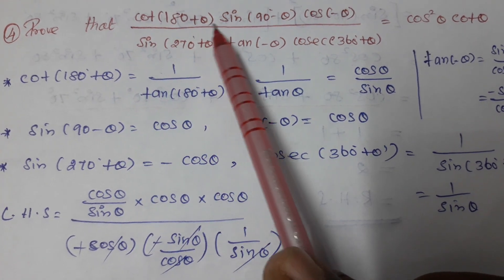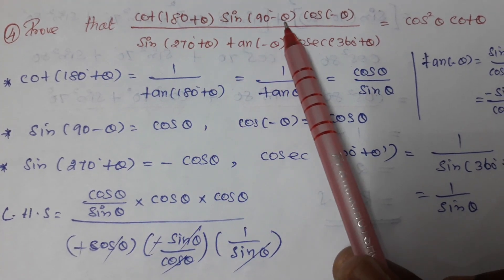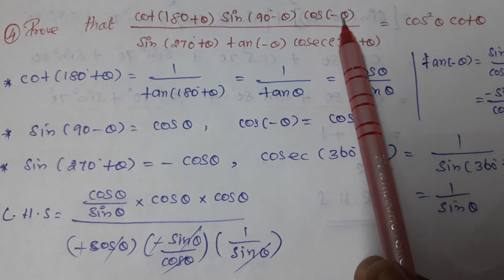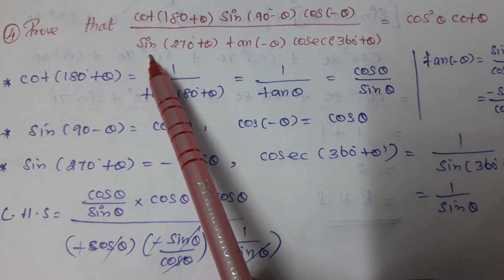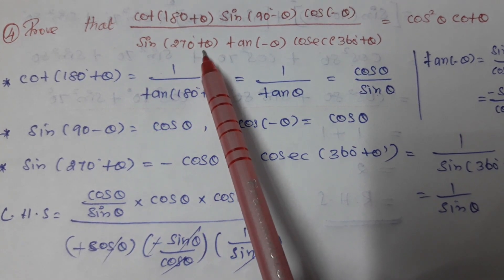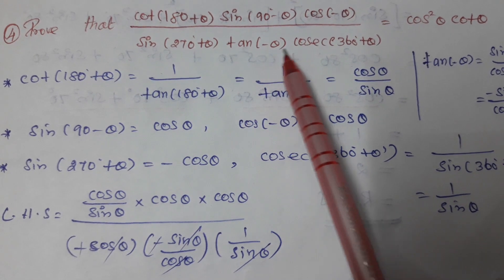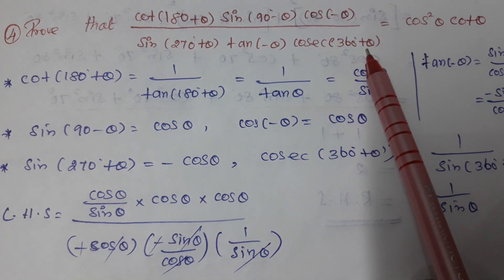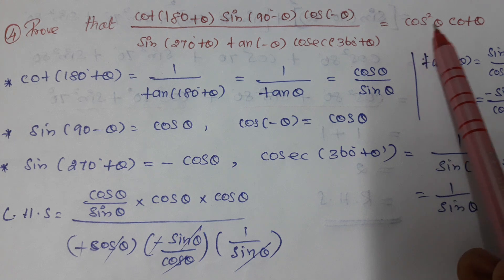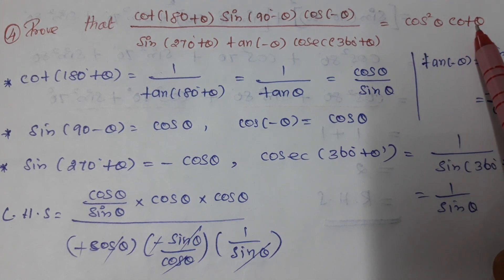The fourth question is: cot(180+θ) into sin(90−θ) into cos(−θ), divided by sin(270+θ) into tan(−θ) into cos(360+θ), is equal to cos²θ into cotθ.